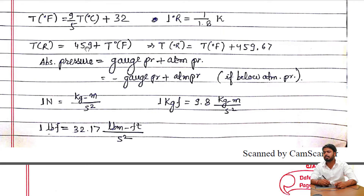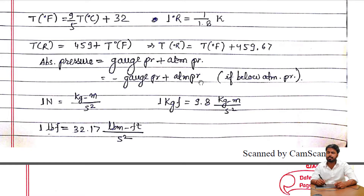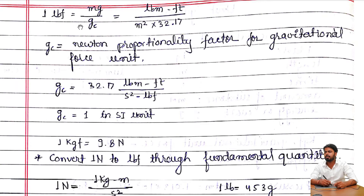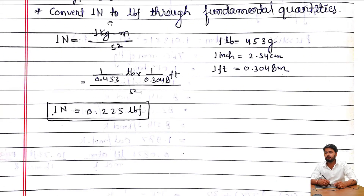Absolute pressure is defined as gauge pressure plus atmospheric pressure. If the pressure is below atmospheric pressure, absolute pressure equals atmospheric pressure minus gauge pressure. 1 Newton equals 1 kg·m/s². 1 kgf equals 9.8 kg·m/s². 1 lbf equals 32.17 lbm·ft/s².